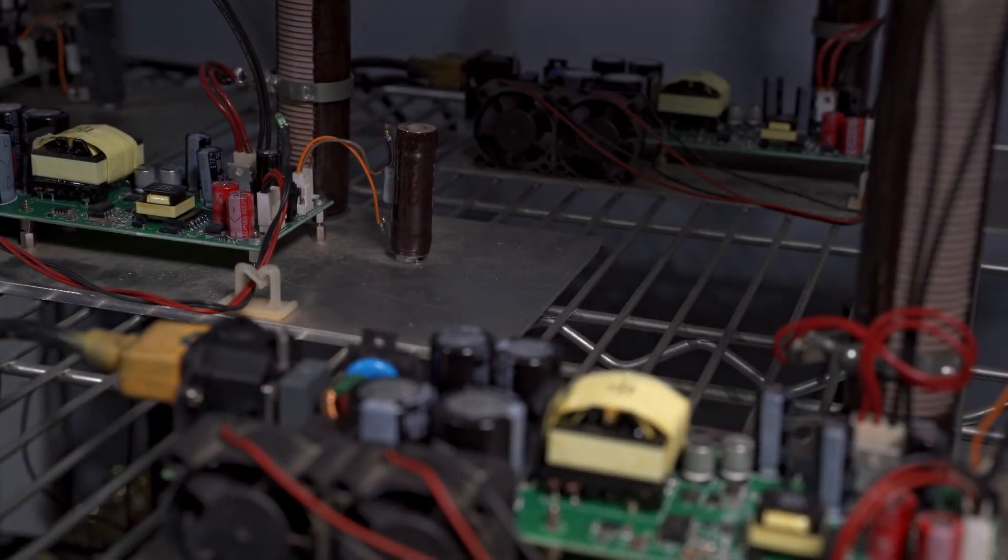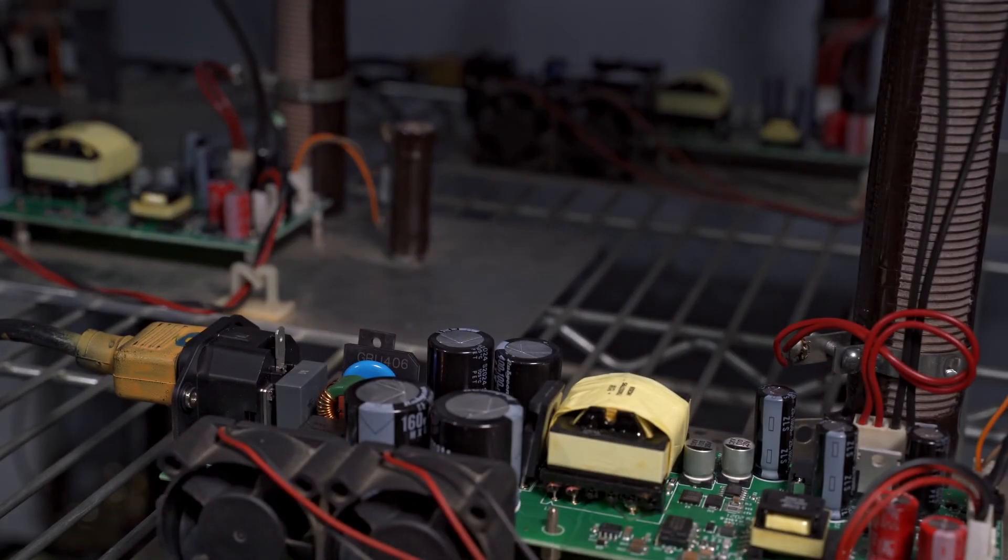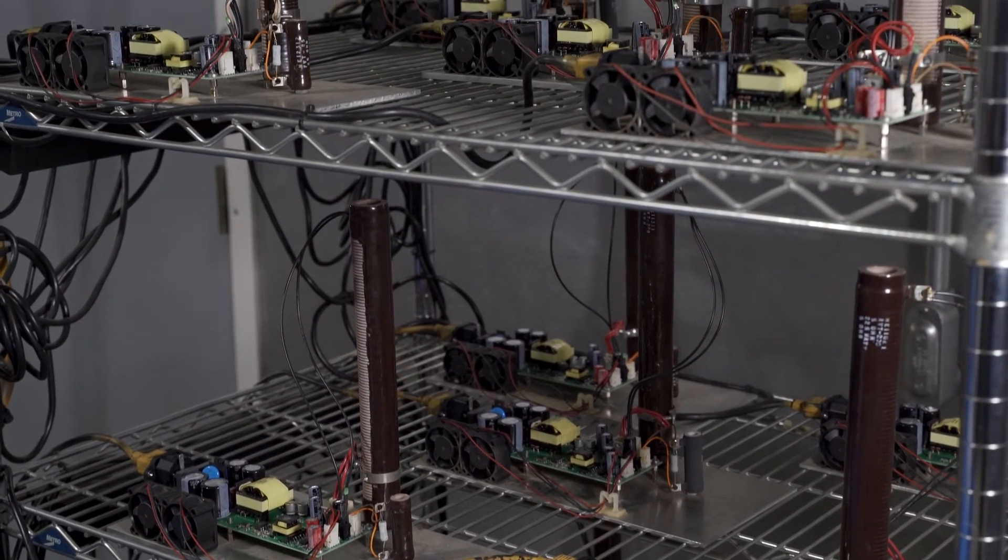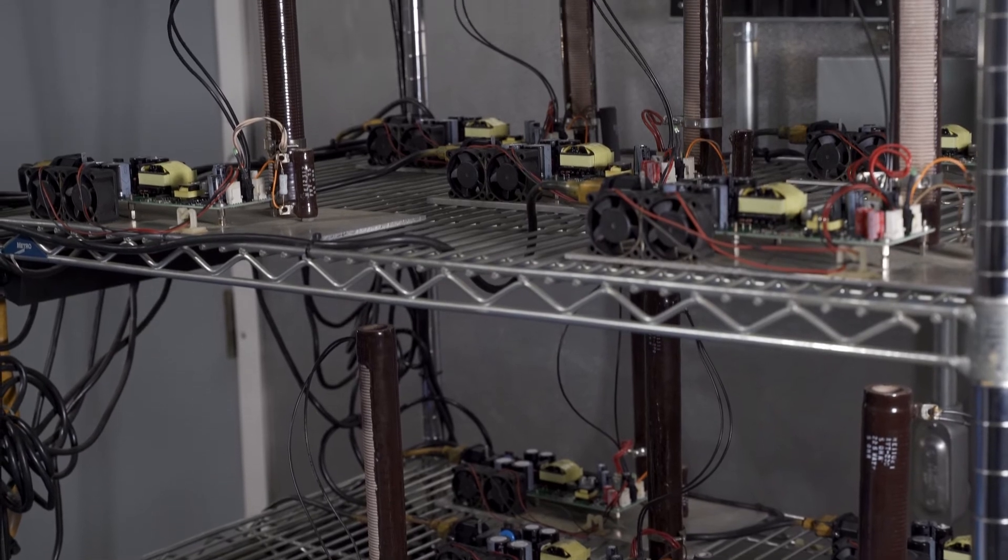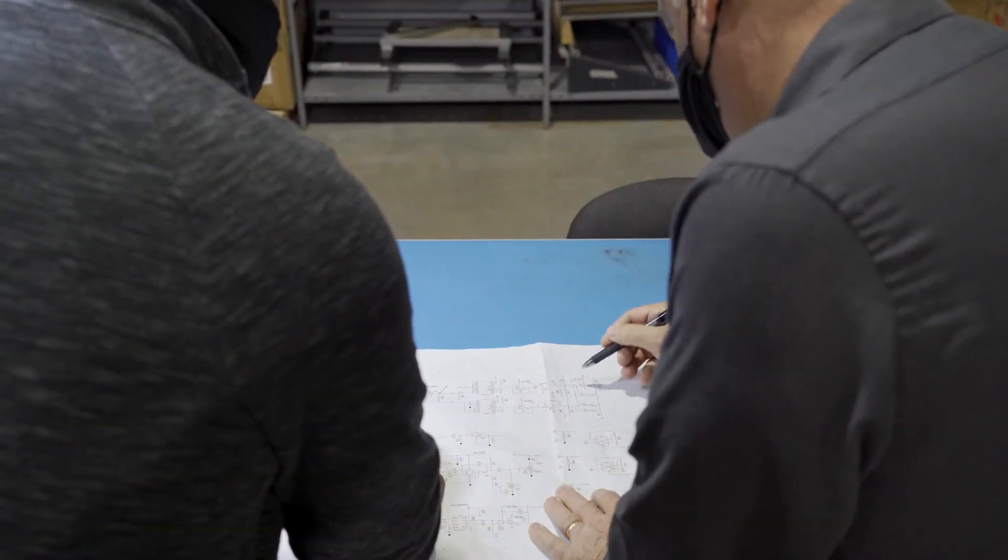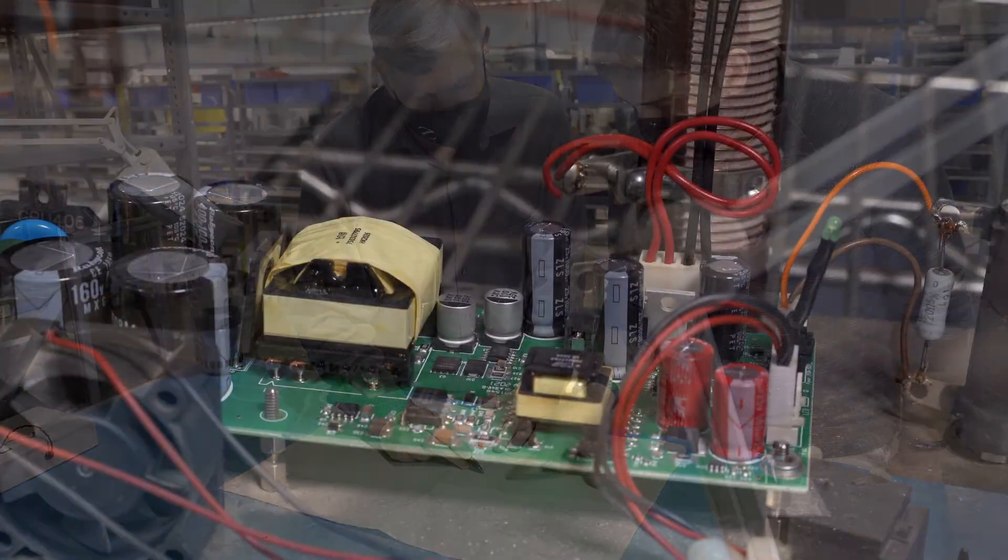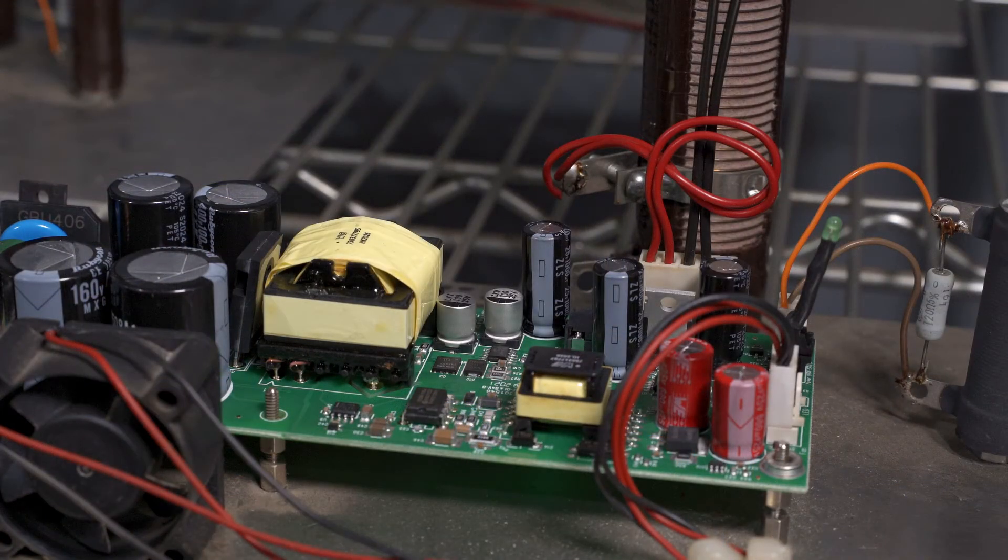Burn-in can find a single bad part or solder joint if one unit fails, or an entire batch of products if a lot of units start failing for the same reason. When that happens, our engineers investigate to discover the root cause and work with our component suppliers and manufacturing engineers to resolve the issue.